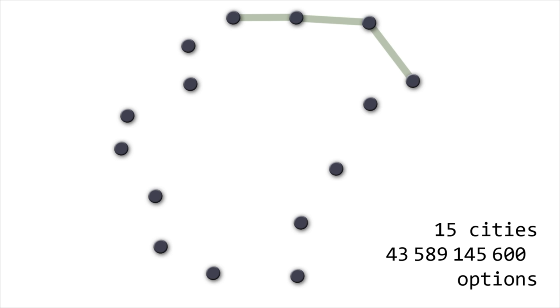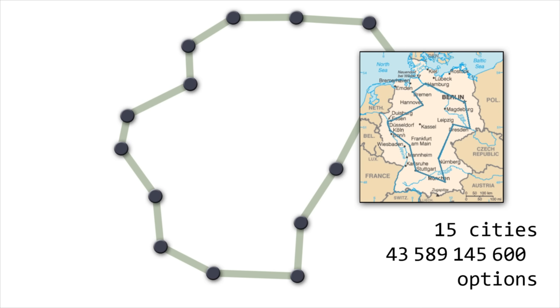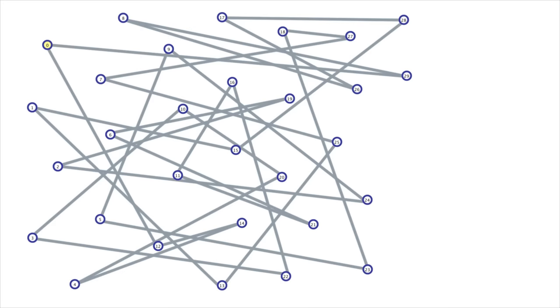In many cases a person can instantly solve this problem. The algorithm tries other options — this is the cardinal difference. When the points connecting the route are located more or less evenly, a person by simply following common sense finds a solution within five percent, maximum ten percent, of the best solutions. From a huge number of options, the bad ones are immediately excluded.